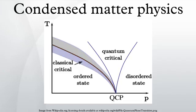History: Classical Physics. One of the first studies of condensed states of matter was by English chemist Humphrey Davy, in the first decades of the 19th century. Davy observed that of the 40 chemical elements known at the time, 26 had metallic properties such as luster, ductility and high electrical and thermal conductivity. This indicated that the atoms in Dalton's atomic theory were not indivisible as Dalton claimed, but had inner structure.